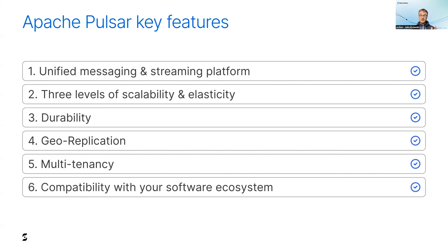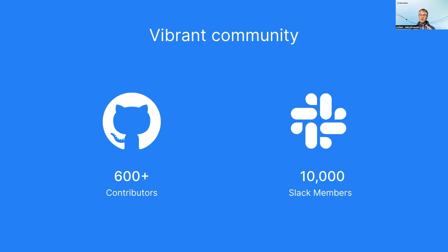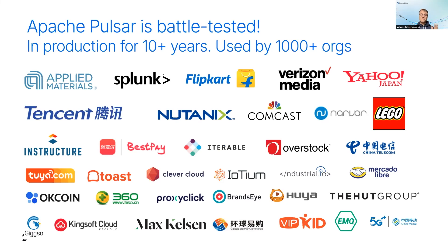When it comes to choosing a technology, open source is key. All the features I presented are available in open source — if you download Pulsar, you'll have all of them. This is great because you don't depend on a specific vendor. You're free to call a vendor to provide Pulsar as a service, like Stream Native, or you can manage a Pulsar cluster yourself. There is no vendor lock-in. Pulsar also benefits from a vibrant open source community with more than 600 contributors and 10,000 members on the community Slack. Additionally, there are thousands of organizations using Pulsar, and it has been in production for over 10 years — it's battle-tested, robust, and mature.